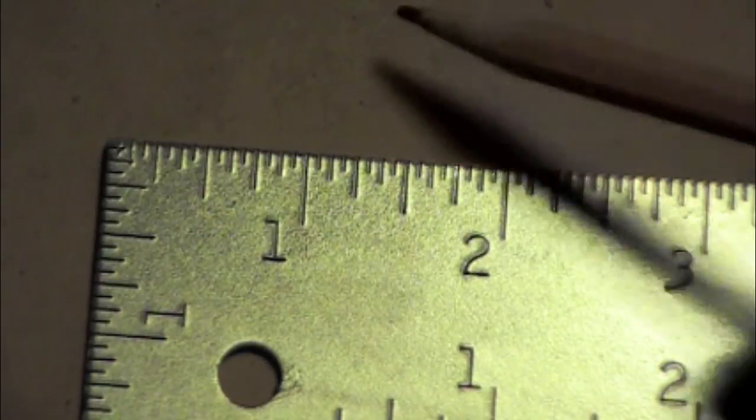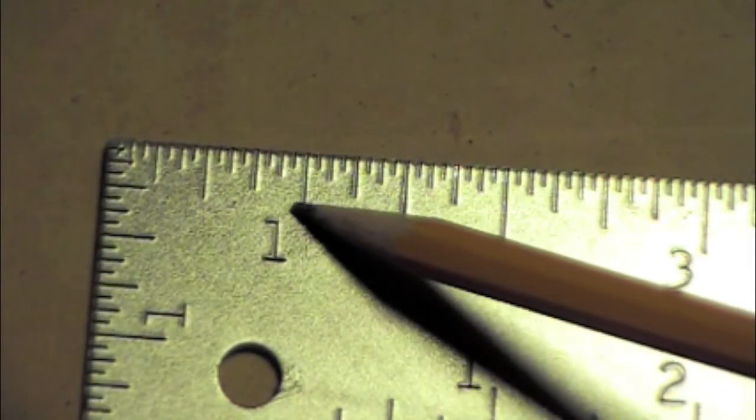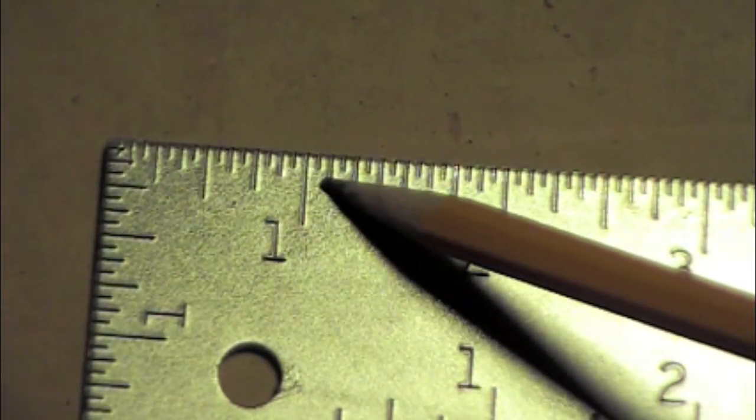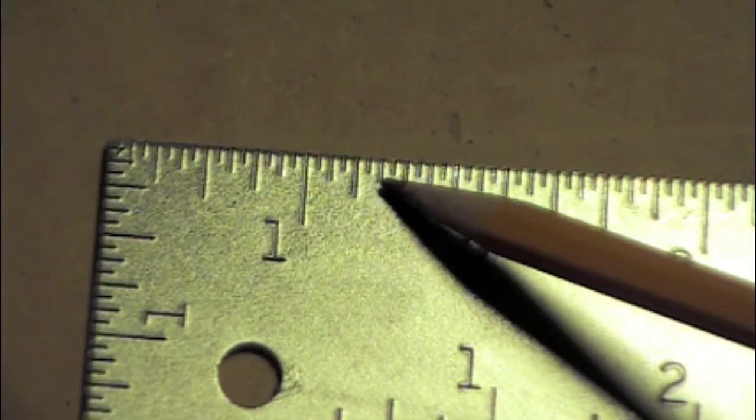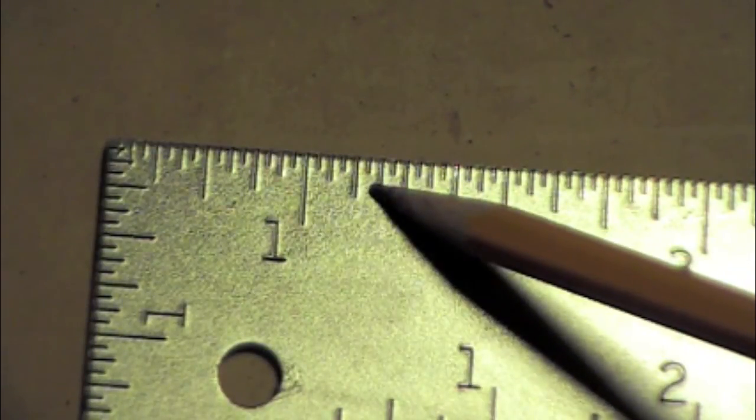Let's look at this on our ruler. We have one inch here, and we have the small eighth marks. One-eighth, two-eighth, three-eighths. So that's one inch three-eighths.